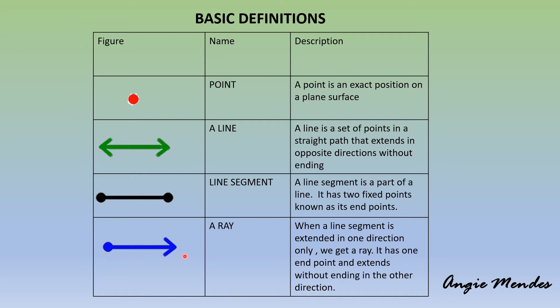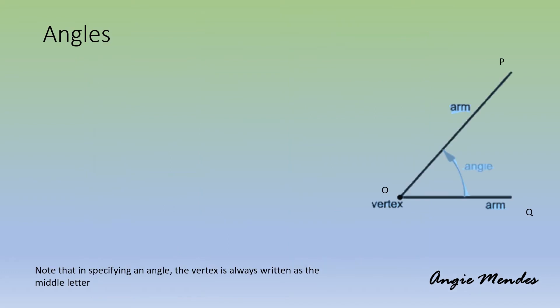A ray: when a line segment is extended in one direction only, we get a ray. It has one end point and extends without ending in the other direction.